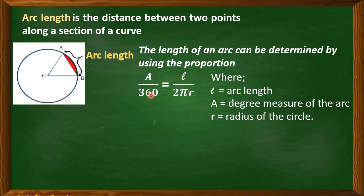we will have 360 arc length that is equal to A times 2πR. Then, we have to divide both sides of the equation by 360. So, we will have arc length is equal to 2AπR.